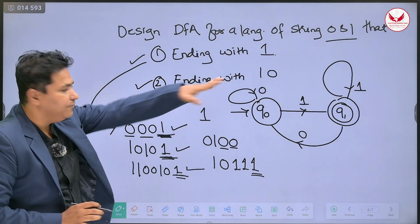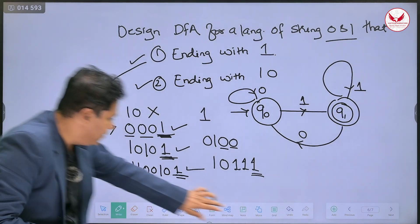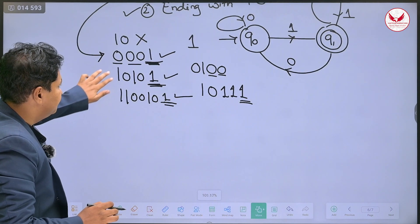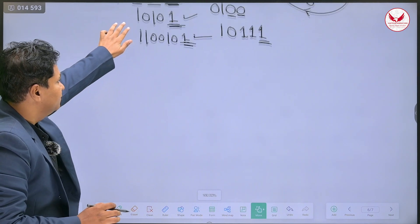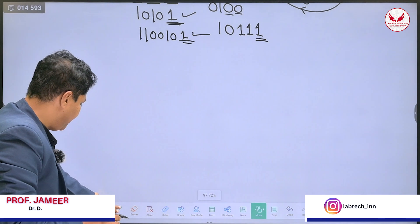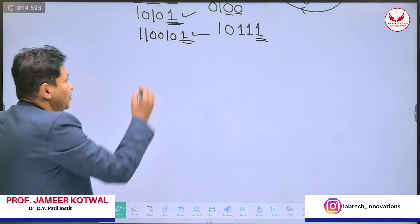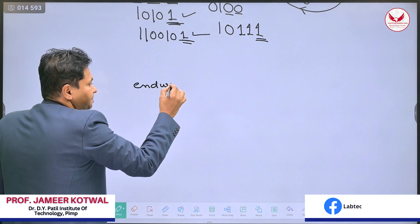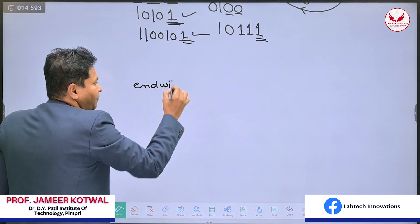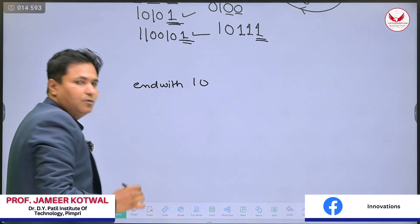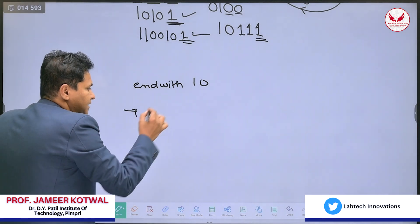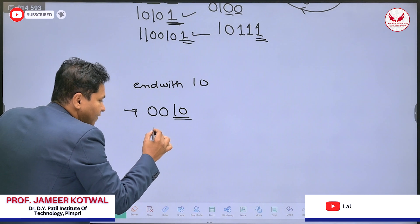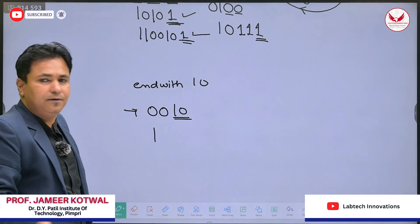What about ending with 1, 0? So now, ending with 1, 0 — the input ending with 1, 0. The string may be 0, 0, 1, 0 — it is ending with 1, 0. The string may start with 1, 1, 0, 1, 0, 1, 1, 1, 0 — again it is ending with 1, 0.